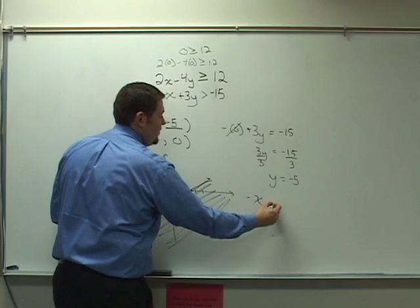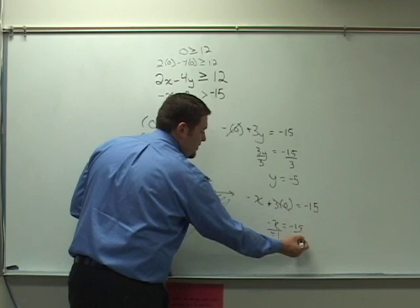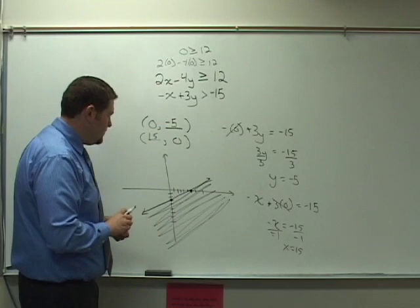Now that y equals zero, so I have negative x plus three times zero equal to a negative fifteen. This goes to zero. I have a negative x equals a negative fifteen divided by negative one. X is equal to a positive fifteen. That goes here.